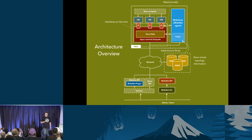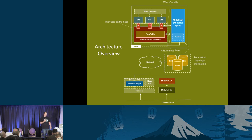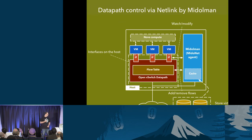Zooming in, the key components of a MidoNet install are the MidoNet agent (Midelman), the network state database (Zookeeper), plus some cluster components in 5.0, and the MidoNet plugin in Neutron. We also have a MidoNet API and CLI, which just talk to the network state database. There are very few moving pieces — it's very straightforward and simple, but this allows you to have a fully distributed network.